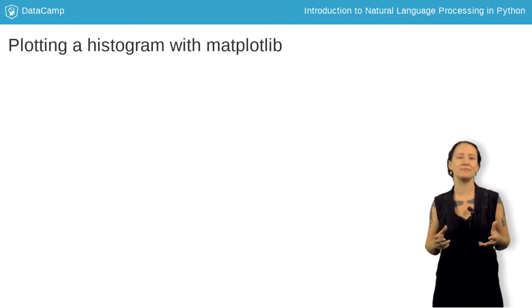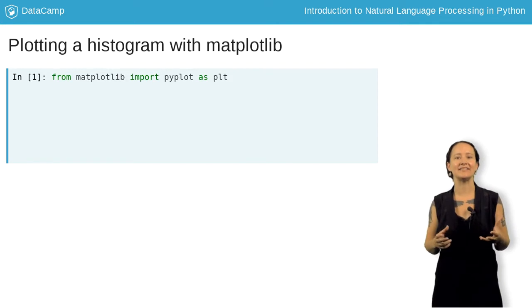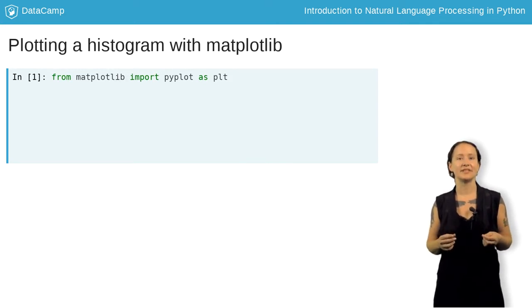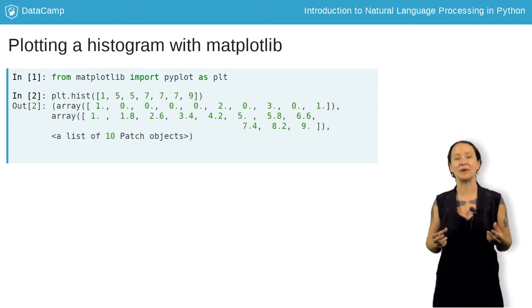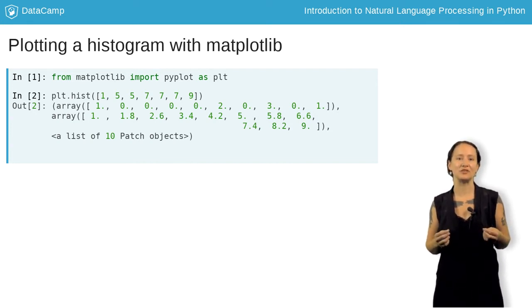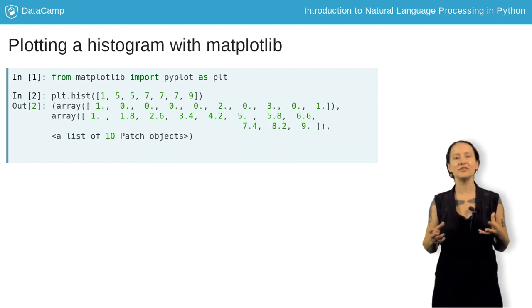Matplotlib is usually imported by simply aliasing the pyplot module as plt. If we want to plot a basic histogram, which is a type of plot used to show distribution of data, we can pass in a small array to the hist function. The array has 5 appearing twice and 7 appearing three times, so it's a good candidate to show distribution.